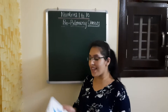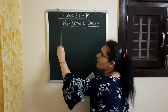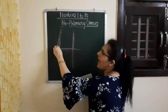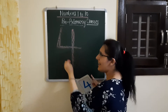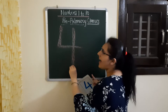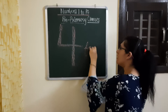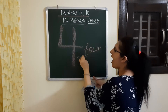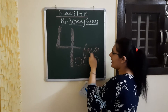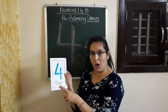Now comes number 4. So let us make it: down and out and cut the line. Down and out and cut the line. This makes number 4. 1, 2, 3, 4. This is number 4.